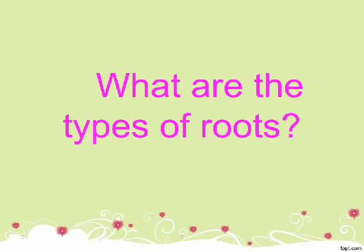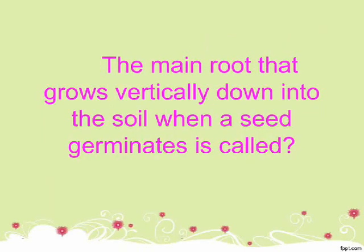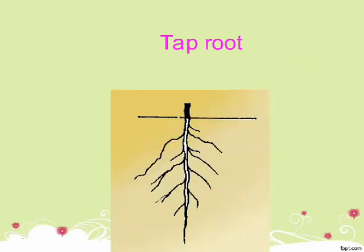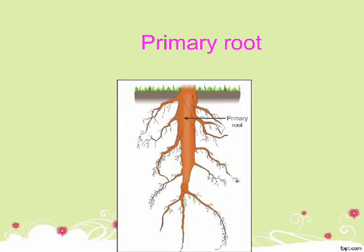What are the types of roots? The types of roots are taproot and fibrous root. The main root that grows vertically down into the soil when a seed germinates is called the taproot. Taproot is also called the primary root.